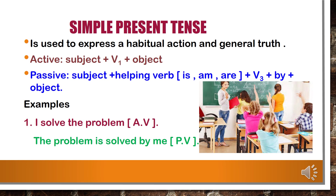Before we go to the example, let's see which helping verb to use. If it is a singular noun, use 'is'. If it is a plural noun, use 'are'. That is: he is, she is, it is, I am, we are, you are, they are.